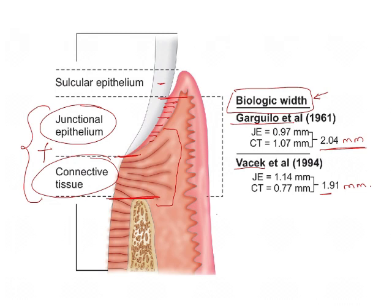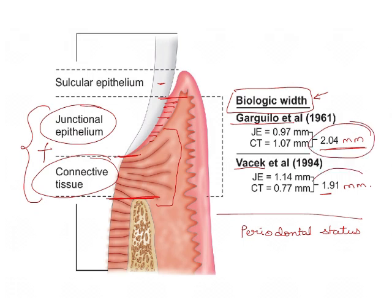The biologic width is important in maintaining the periodontal status of a tooth. If the value of biologic width is reduced — that means if this epithelium is compromised, or if the connective tissue is compromised — it leads to bone loss and therefore recession.